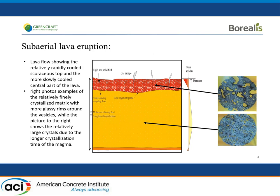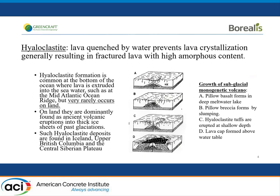In a typical sub-aerial lava eruption, the lava cools slowly in the air. When you have a lava eruption normally at the bottom of the ocean or under a glacier, water quenches the lava, shattering it into small particles and arresting crystal formation — which basically means it becomes a volcanic glass.